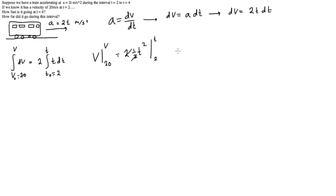So let's just keep going with this, and we'll fill out these. We get v minus 20 is equal to t squared minus 2 squared. This is minus 4. So we get v is equal to t squared minus 4 plus 20, which is equal to t squared plus 16.